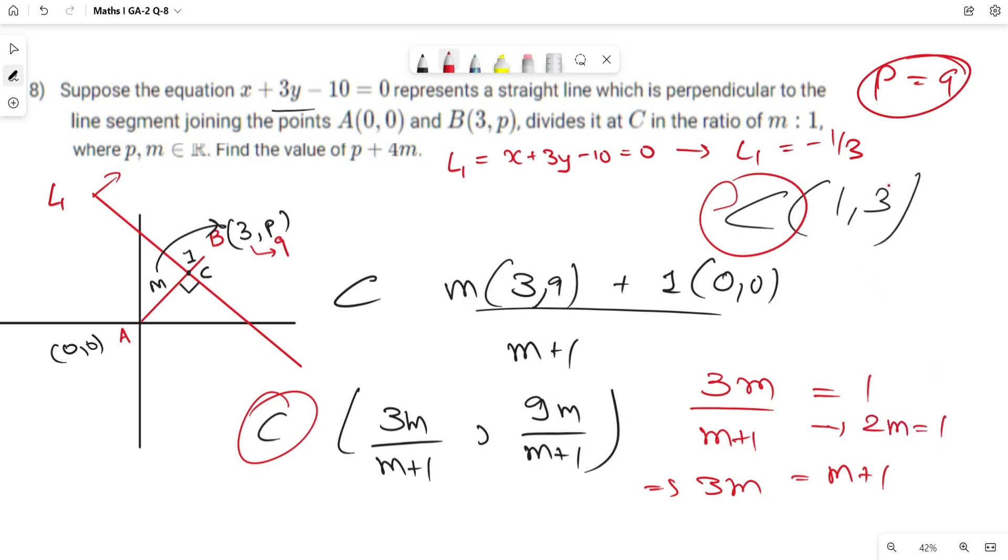Now p plus 4m is 9 plus 4 times 0.5 equals 11. Hence your answer is 11.